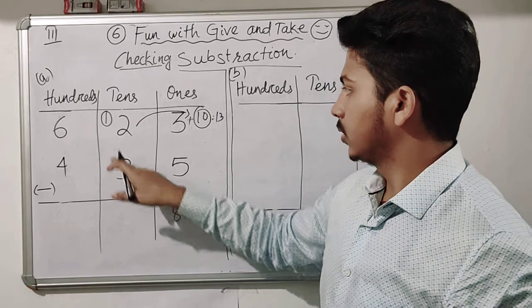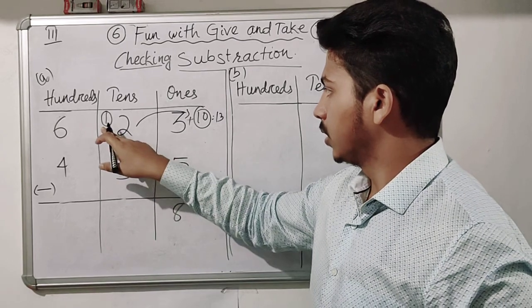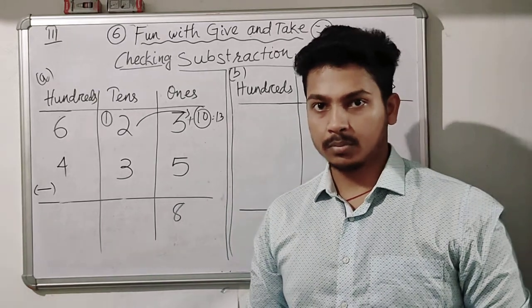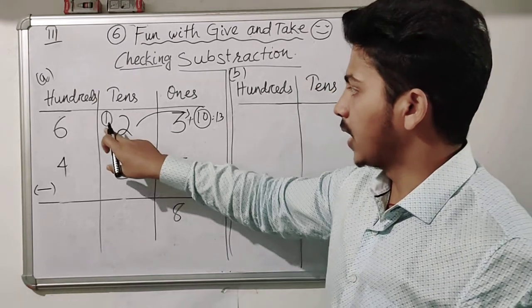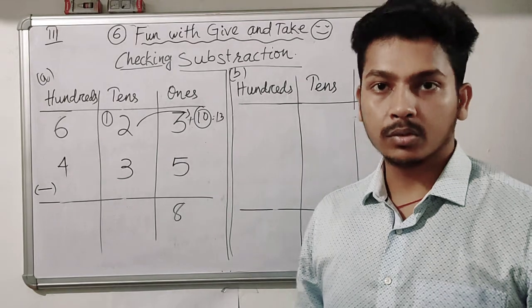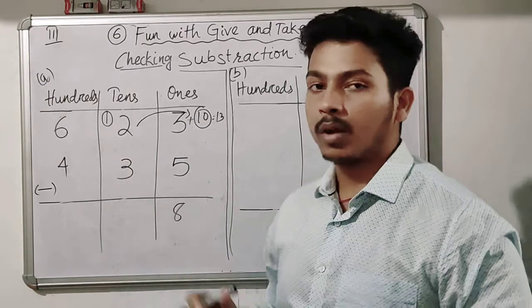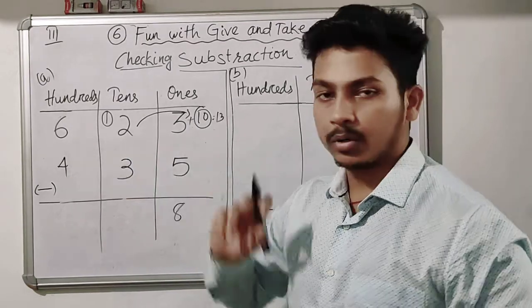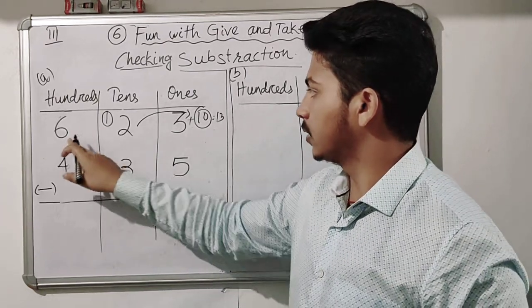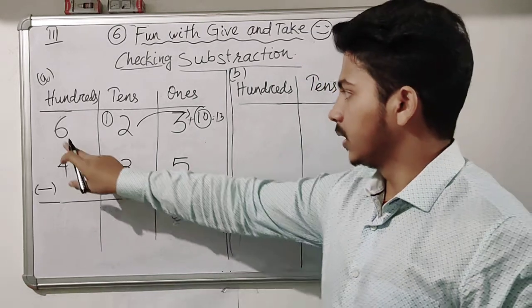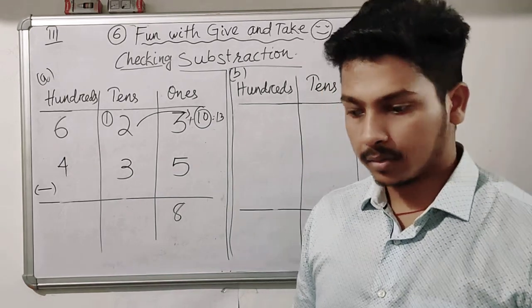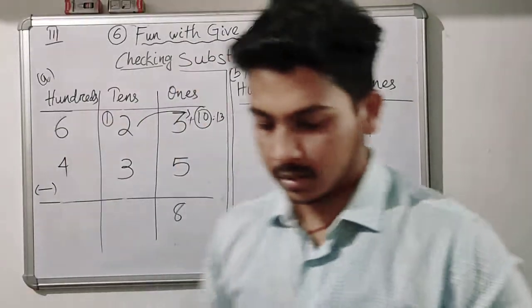Now here, remember there is one, so one minus three. Is it possible? No, it is not possible because one is smaller than three. Then what will we do? This person went to his neighbor, which is six - six hundreds.